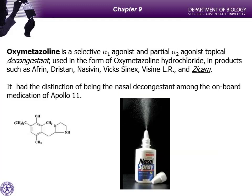Another agonist is oxymetazoline, which is selective for alpha-1 receptors. If you have nasal congestion and grab a bottle of Afrin or Dristan, squirting that into your nose causes constriction of blood vessels in the nasal mucosa. Less blood flows to the mucosa, so less fluid can leak out, decreasing inflammation and congestion.